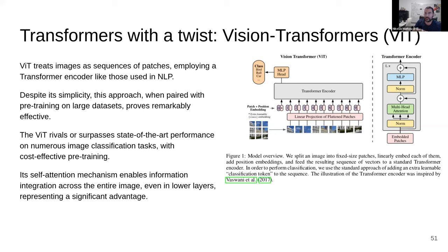Visual transformers treat images as sequences of patches employing the transformer encoding like they did in NLP. Despite its simplicity, this approach paired with pre-training, again the pre-training, we need huge amounts of data to make this thing work, assuming more than 4 million data points. But it provided remarkably effective. It hit state-of-the-art very fast on everything, assuming you had pre-training.